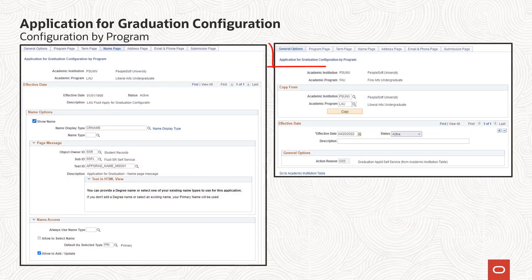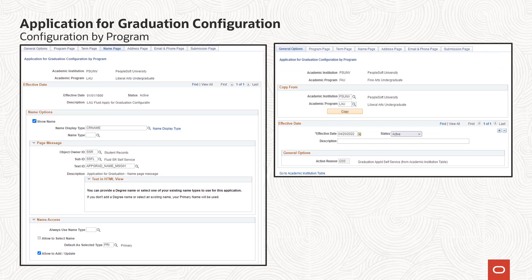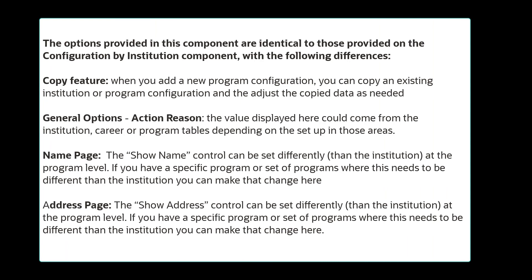The configuration by program component allows users to configure the application process differently for specific academic programs. A copy feature is included so that configuration can be copied from one program to another. The options provided in this component are identical to those provided on the configuration by institution component, with the following differences: when you add a new program configuration, you can copy an existing institution or program configuration and then adjust the copied data as needed. For general options action reason, the value displayed here could come from the institution, career, or program tables depending on the setup in those areas.